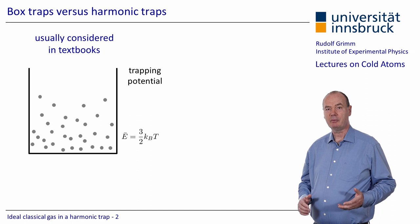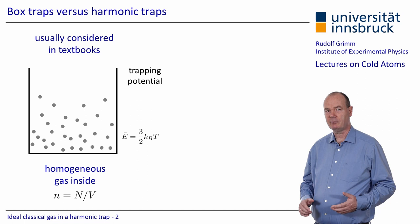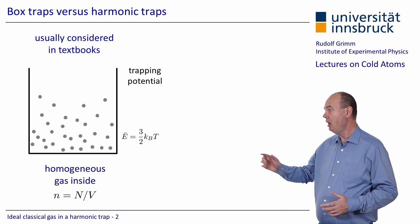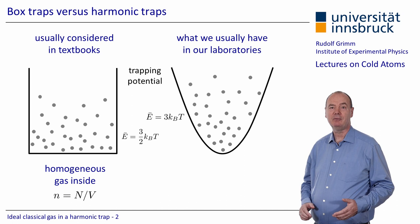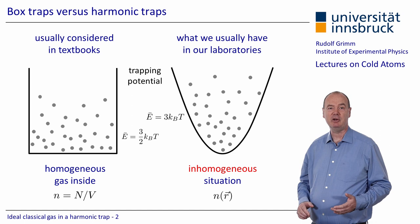Within the box the situation is homogeneous, with a number density simply given by the total number of particles divided by the volume. In contrast, what we usually have in our laboratories is a three-dimensional harmonic trapping potential. The mean energy per particle is now 3 k_B T because, in a harmonic oscillator, potential energy gives the same contribution as the kinetic energy. We then encounter an inhomogeneous situation where the number density is a function of position.